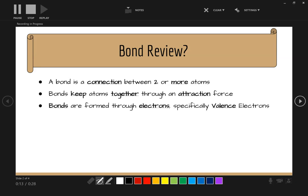Bonds are formed through electrons, specifically the valence electrons, and valence electrons are the most important electrons. They are the ones that are involved in bonds.